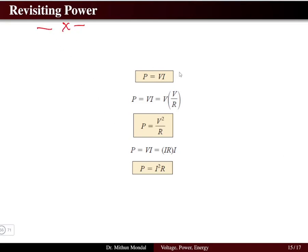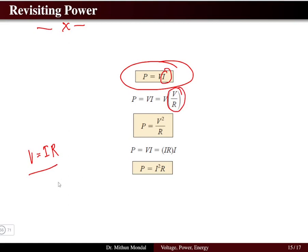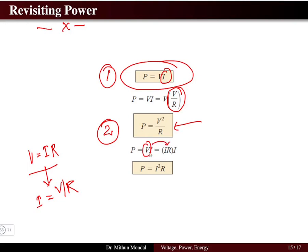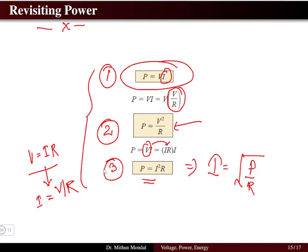Revisiting the power equation P = VI and combining it with Ohm's law V = IR, we can substitute to derive additional power formulas. Replacing current with V/R gives P = V²/R. Replacing voltage with I×R gives P = I²R. If power and resistance are known, current can be found as I = √(P/R). These three power formulas are important for solving circuit problems.